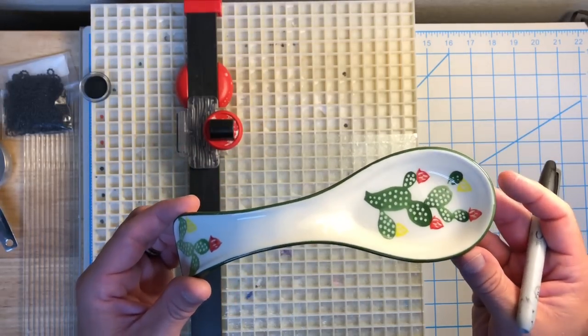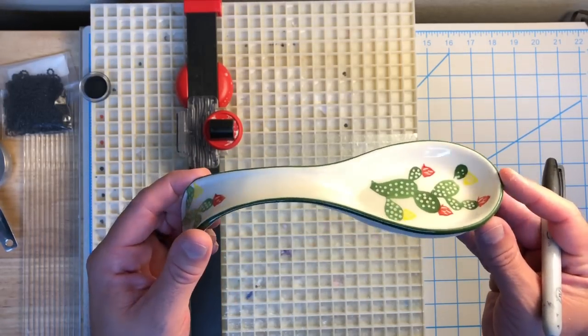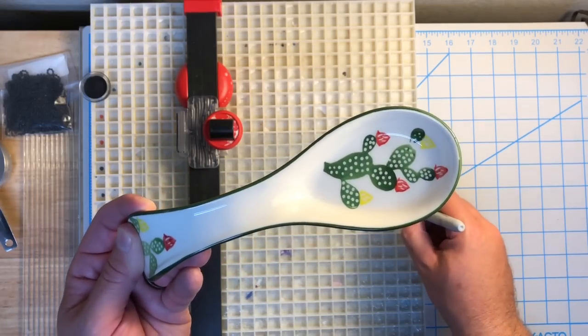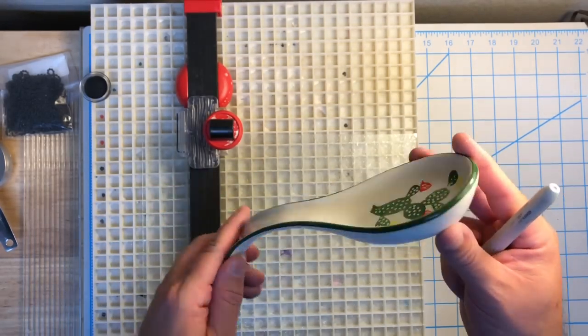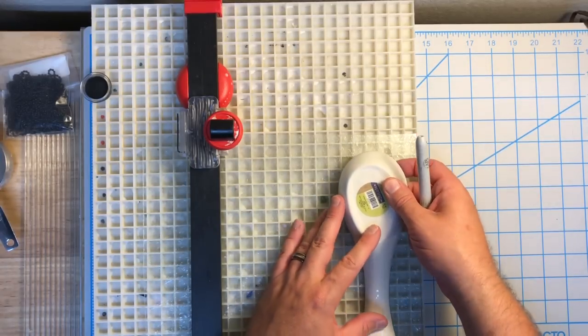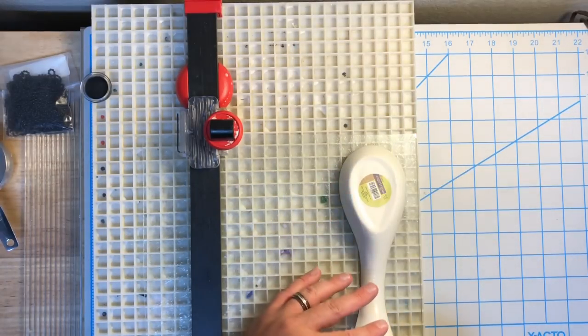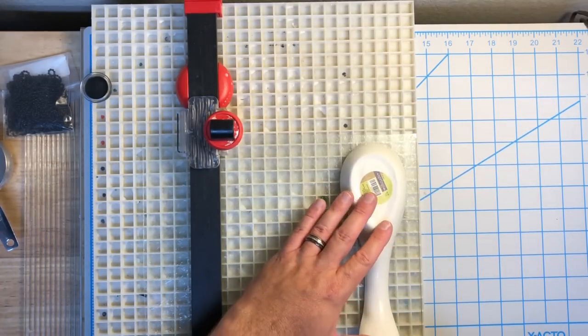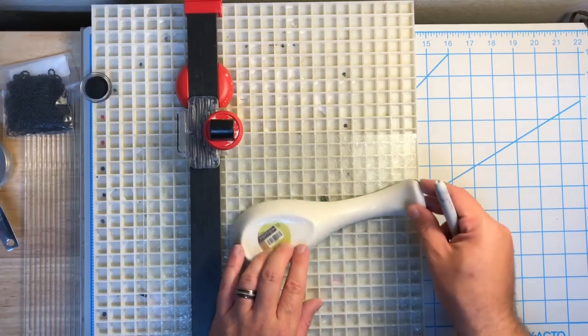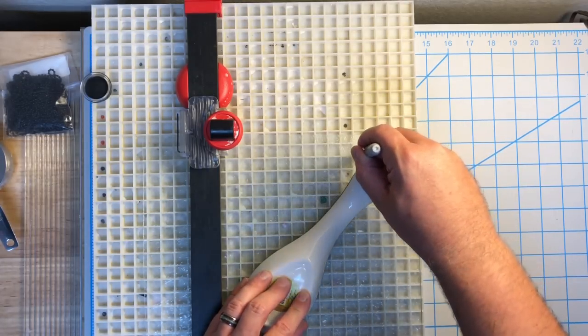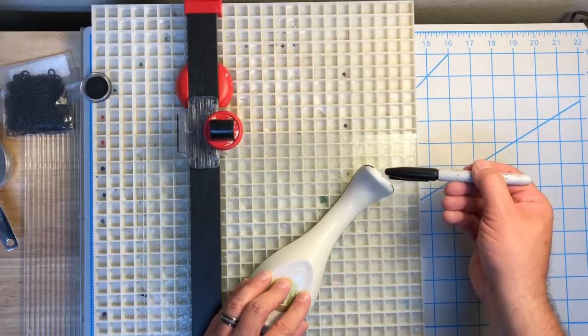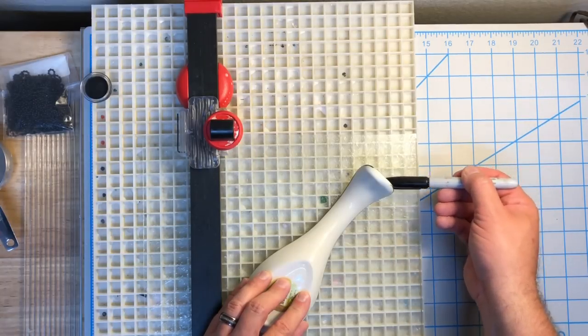What I'm trying to see if I can accomplish is using a single layer of this glass to make a spoon rest. And so what I think I'm going to do is, as I trace this out to cut my glass, I'm actually going to extend past the end a little bit in order to accommodate the drop that happens in the bottom of that handle.